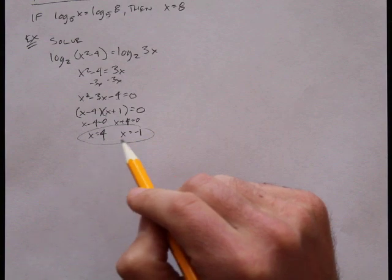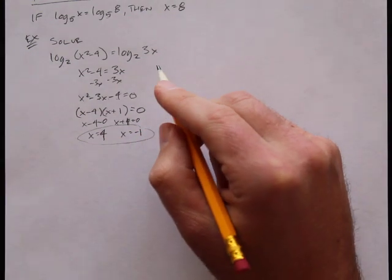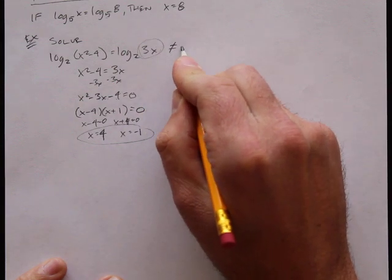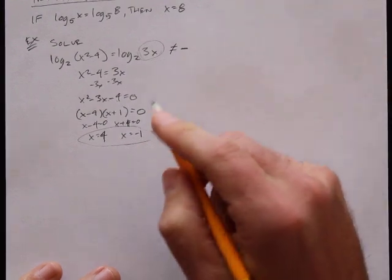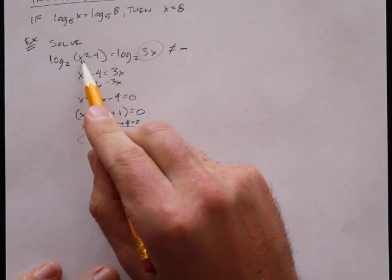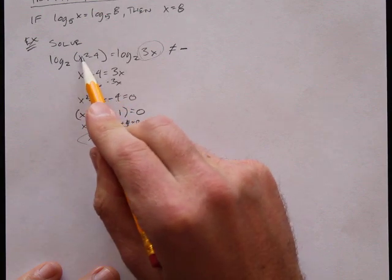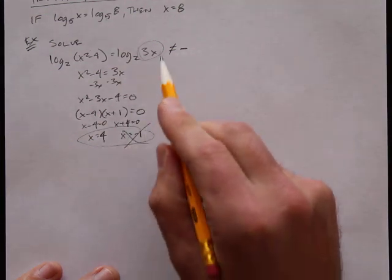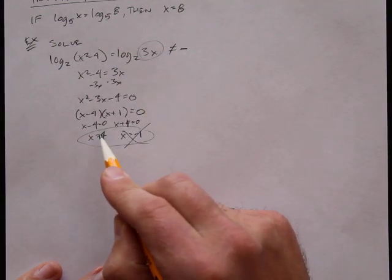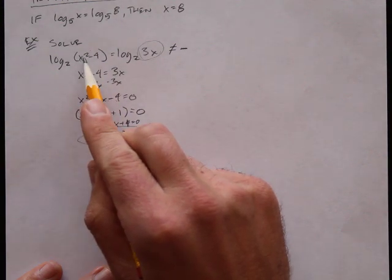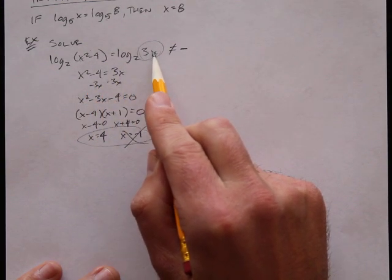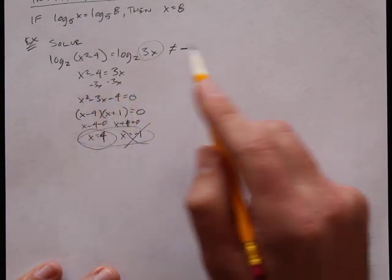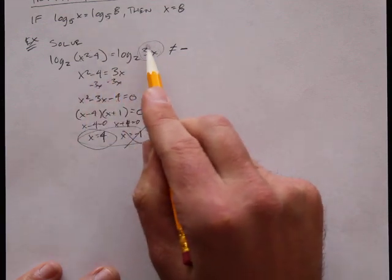I need to plug these back in to check if they work, because the argument of the logarithm cannot be negative. If I plug in negative 1, I get negative 1 squared minus 4 equals negative 3 — that's not going to work. If I plug in 4, that's 16 minus 4 equals 12, and 3 times 4 is 12. So x equals 4 is okay, but x equals negative 1 is not.